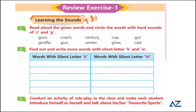Learning the sounds: read aloud the given words and circle the words with the hard sound of C and G. When C makes a 'k' sound, it is hard; when C makes an 's' sound, it is soft. Similarly, when G makes a 'ga' sound, it is hard; when G makes a 'ja' sound, it is soft. Underline the hard sounds and identify the soft sounds.